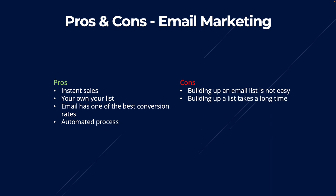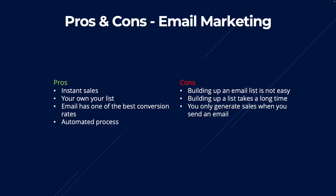The second con is that building up an email list takes a long time. If you only have 10 people on your email list, you're not going to generate much affiliate revenue. To generate real, solid, tangible results, you want to have at least 1,000 people on your list. The third con is that you only generate sales when you send an email, whereas with a Google Ads campaign or SEO you have the potential to generate sales literally 24/7, 365 days a year.